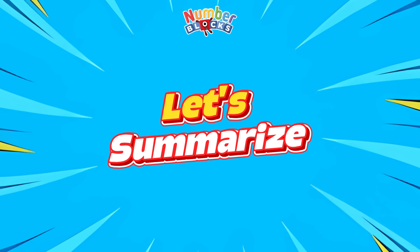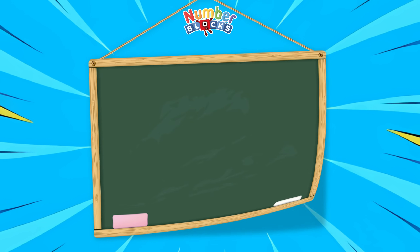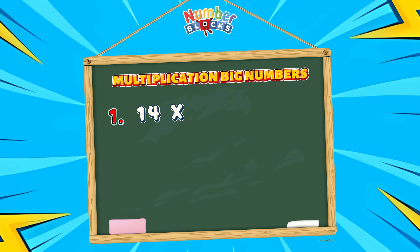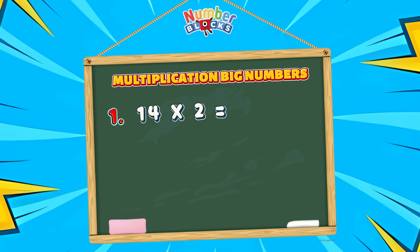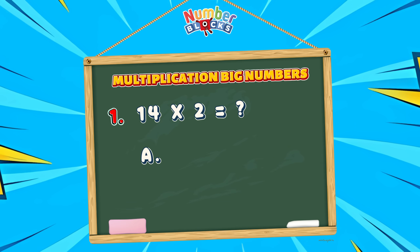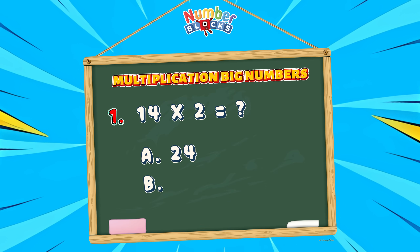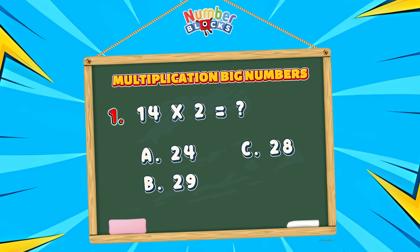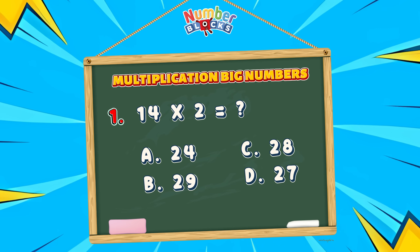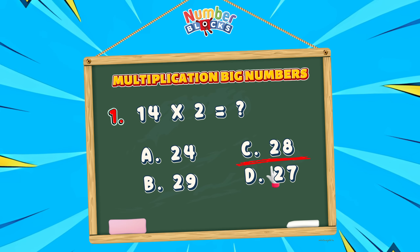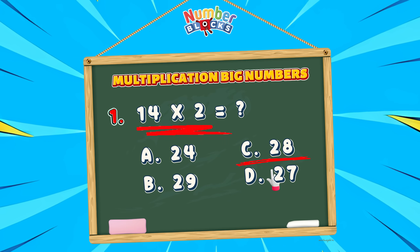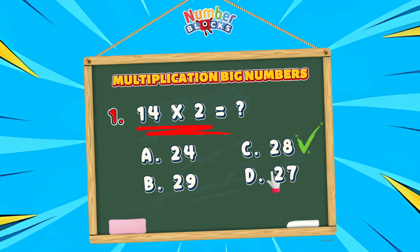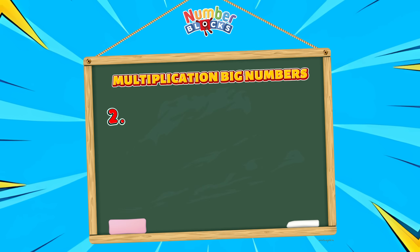Join me and let's summarize. Question number 1: 14 multiplied by 2 is equals to... A, 24. B, 29. C, 28. Or letter D, 27. 28 is the right answer. 14 multiplied by 2 is equals to 28.